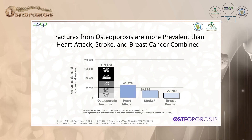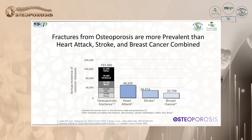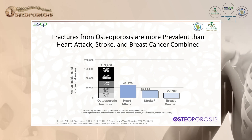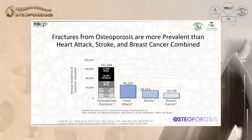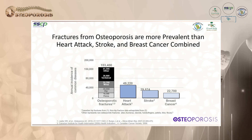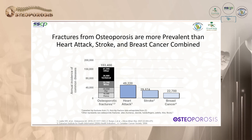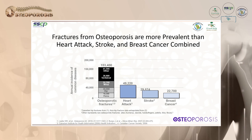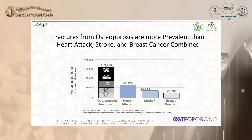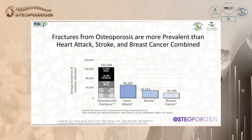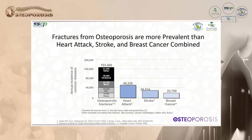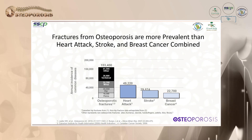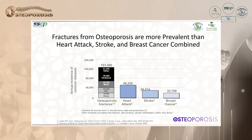Data from Osteoporosis Canada shows that fractures from osteoporosis are more prevalent than heart attack, stroke, and breast cancer combined. Breast cancer accounts for over 22,000 cases, stroke about 29,000, heart attack almost 50,000, but fractures from different sites total almost 153,000 per year — a very large number.